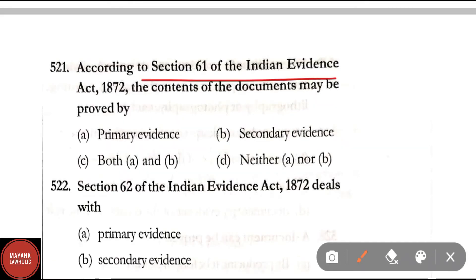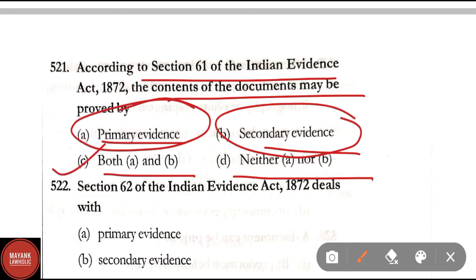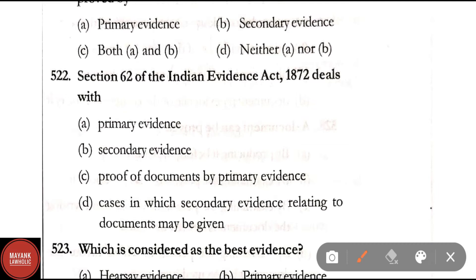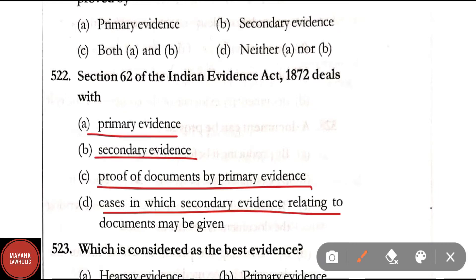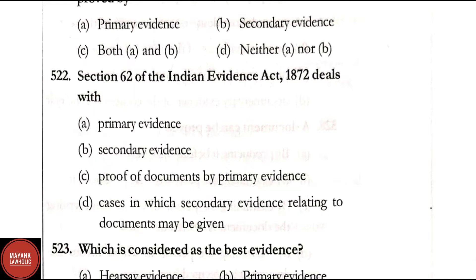Question 521: According to Section 61 of the Indian Evidence Act, the contents of a document may be proved by — primary evidence, secondary evidence, both A and B, or neither. Correct answer is Option C — both primary and secondary evidence. Question 522: Section 62 of the Indian Evidence Act deals with — primary evidence, secondary evidence, proof of documents by primary evidence, or cases in which secondary evidence may be given. Correct answer is Option A — primary evidence.